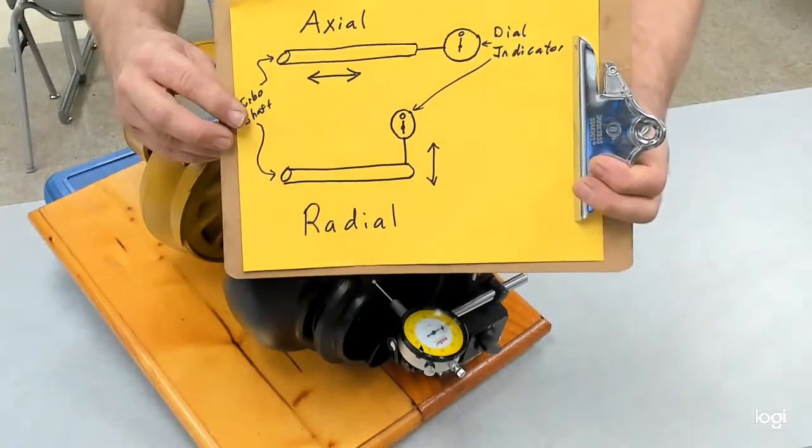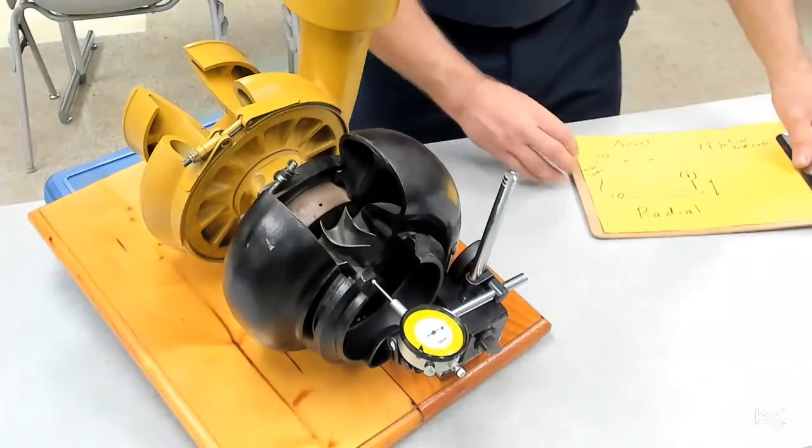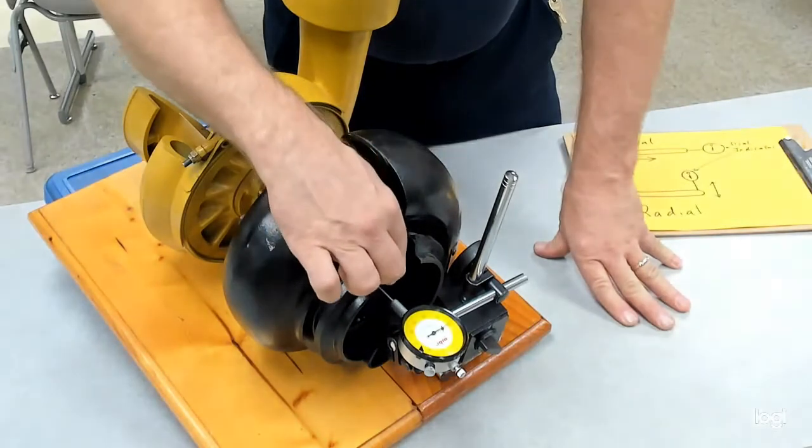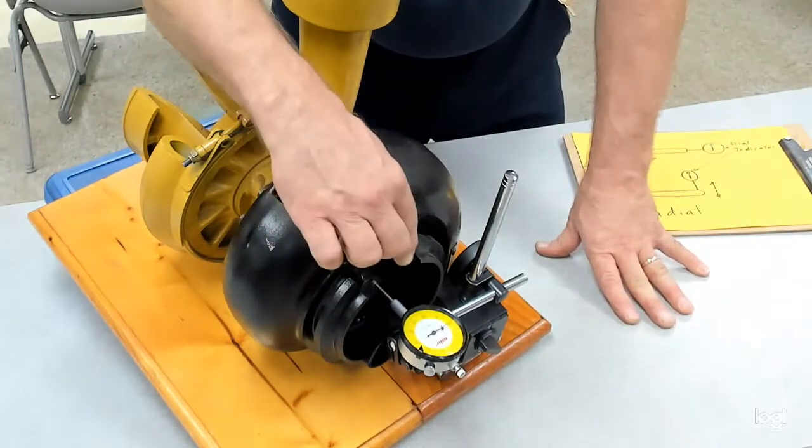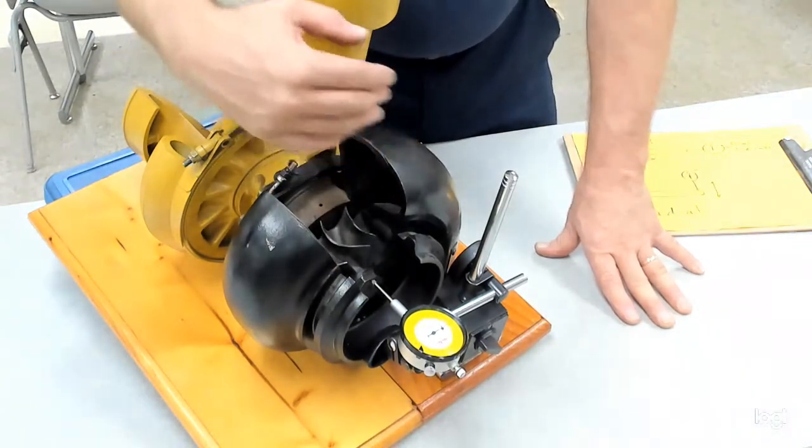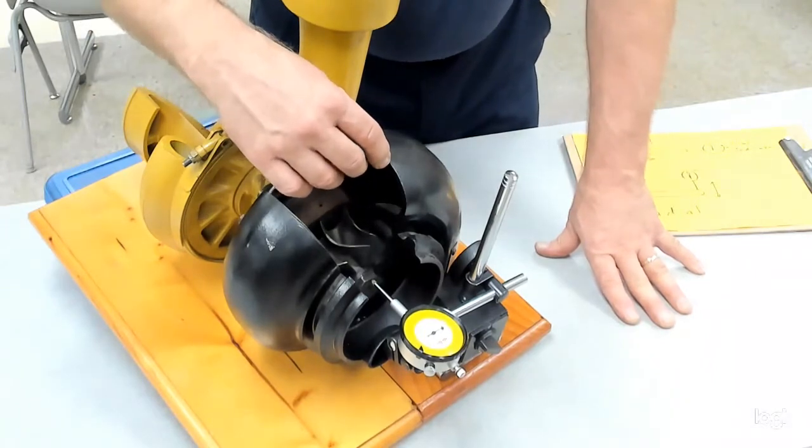So our setup is very similar. The dial indicator and the tip of it will be against the end of the nut or the shaft that holds the turbine wheel or the compressor wheel in, depending on which side—if it matters—that the service manual tells you to set up on.